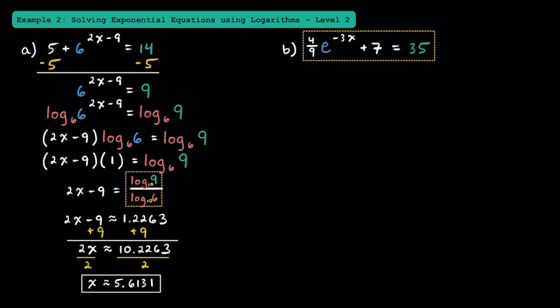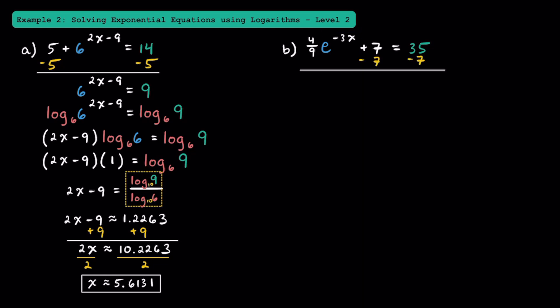Now let's try this equation where we have 4 ninths times e to the negative 3x power plus 7 is equal to 35. Our first goal is getting the e to the negative 3x power by itself. We'll start by subtracting 7 from both sides, leaving 4 ninths e to the negative 3x power on the left and 28 on the right. Then to get rid of the 4 ninths, we multiply both sides by 9 fourths, and this simplifies down to e to the negative 3x power is equal to 63.